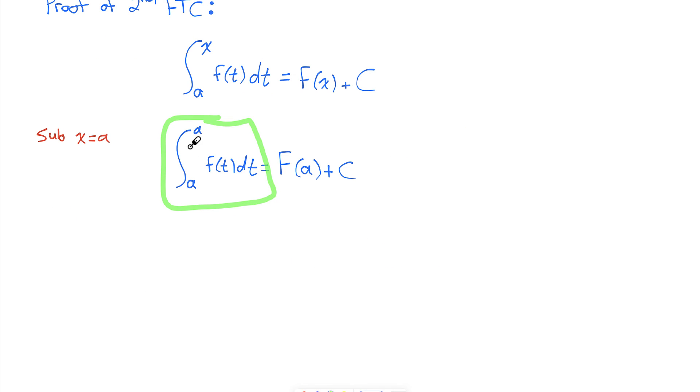Now the left side of this equation, I would interpret this as the area between a and a. If I were to try and draw that, it's just a vertical line, there's no region, so our area is going to be zero. So I can say zero equals capital F(a) plus the constant of integration. And if I solve for the constant of integration, it's equal to negative capital F(a).